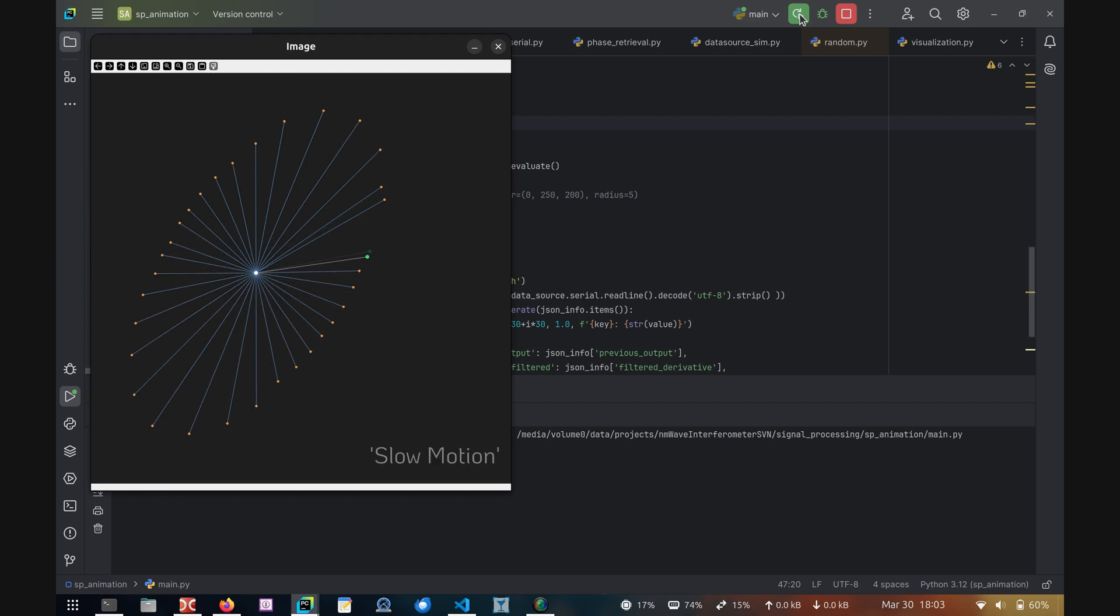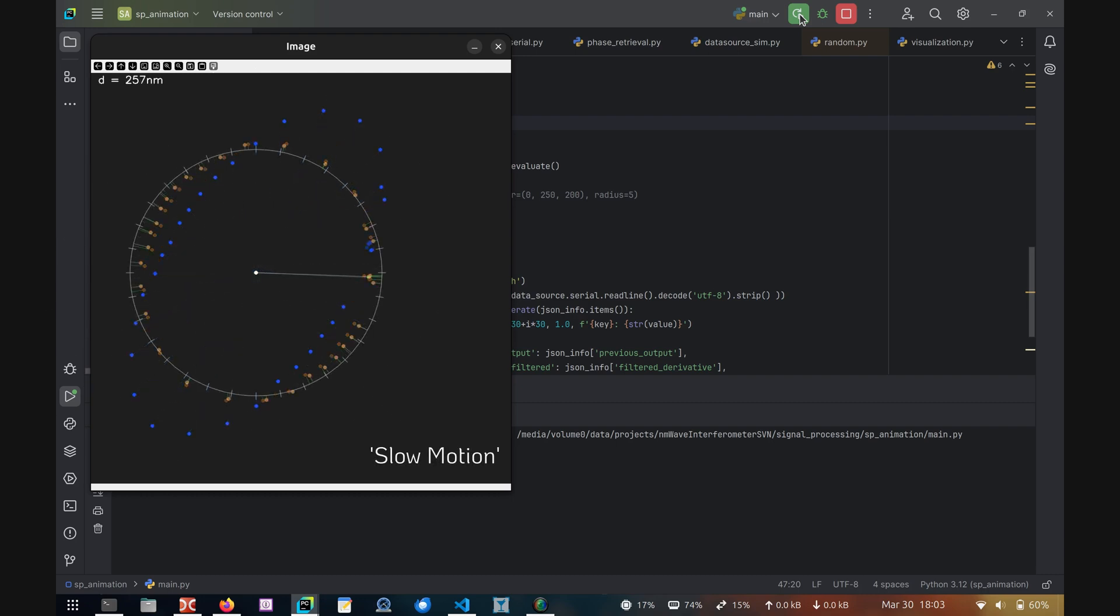During runtime, bins are updated as described. At the same time, an affine transformation is continually optimized to transform the recorded points onto a circle. From there, the phase angle is easily computed.